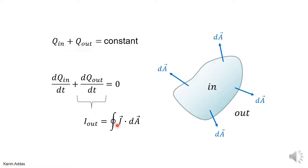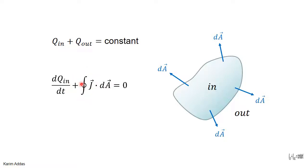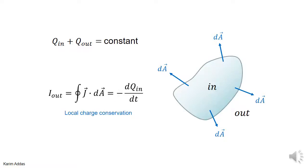dQ_out/dt is simply the integral of j·dA. The area vectors for a closed surface by convention point from inside to outside, so automatically when you compute the integral of j·dA through a closed surface, you are looking at how the charge on the outside is changing with time. Therefore, dQ_out/dt equals the integral of j·dA. Substituting back, we get the relationship that the current through the surface equals minus dQ_in/dt.